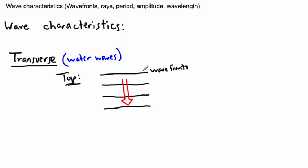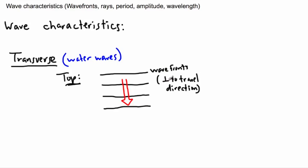Sometimes people like to draw these things with wave fronts. Notice that the wave fronts — these lines — are perpendicular to the direction of travel. I'm going to write that down. The mathematical shortcut for perpendicular is a little angle symbol. So wave fronts are perpendicular to the travel direction. Whichever way the wave travels, the wave fronts are going to be at 90 degrees — perpendicular to that direction.